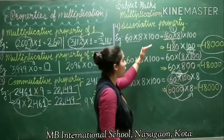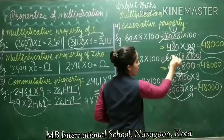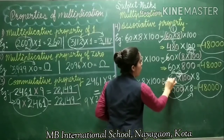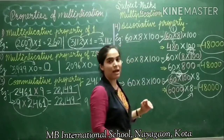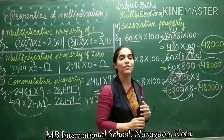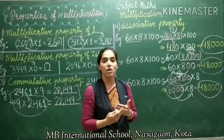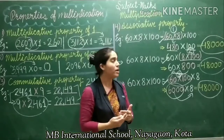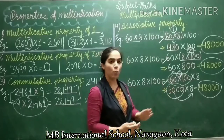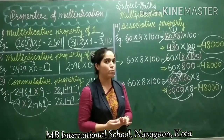All 3 orders are equal — the 1st order, the 2nd order, and the 3rd order. When we change the group, when we change the order, we still get the same products. All the orders are equal. This property is called associative property.